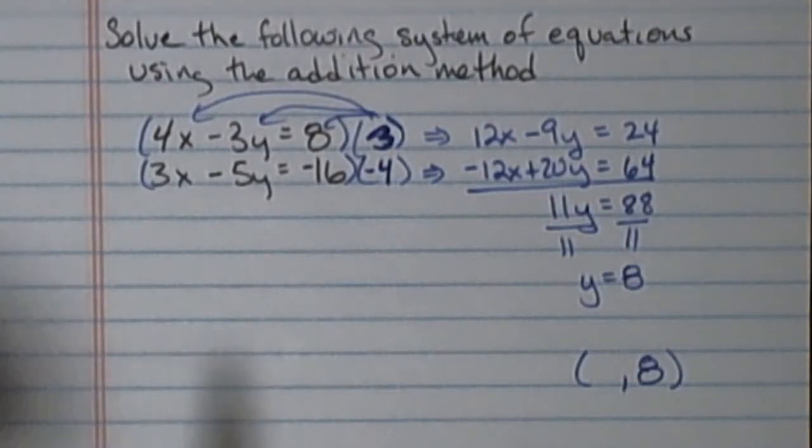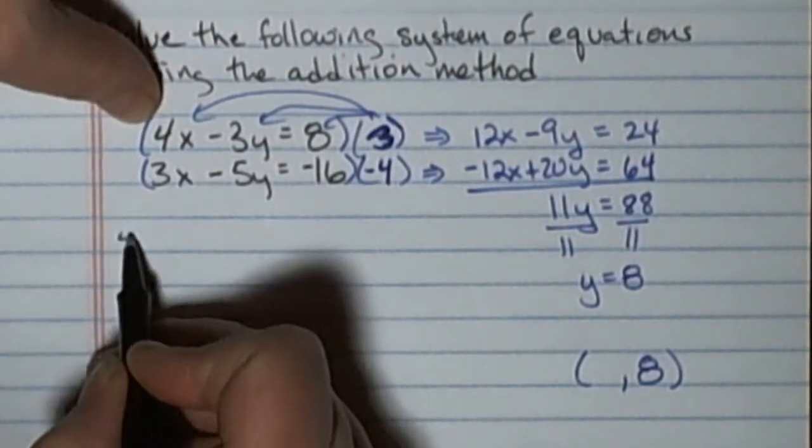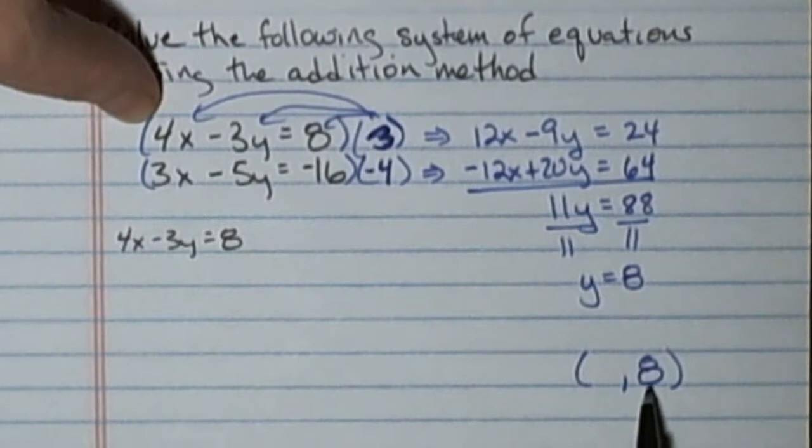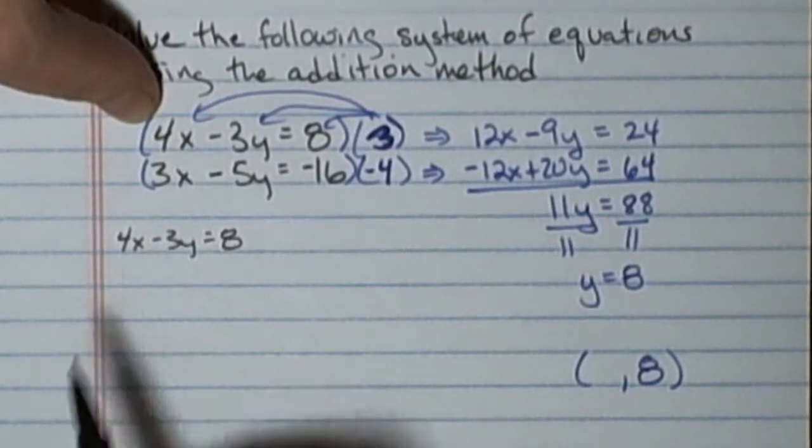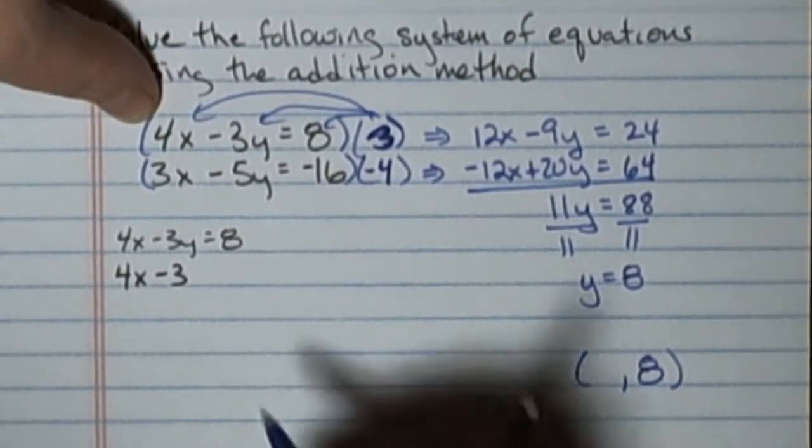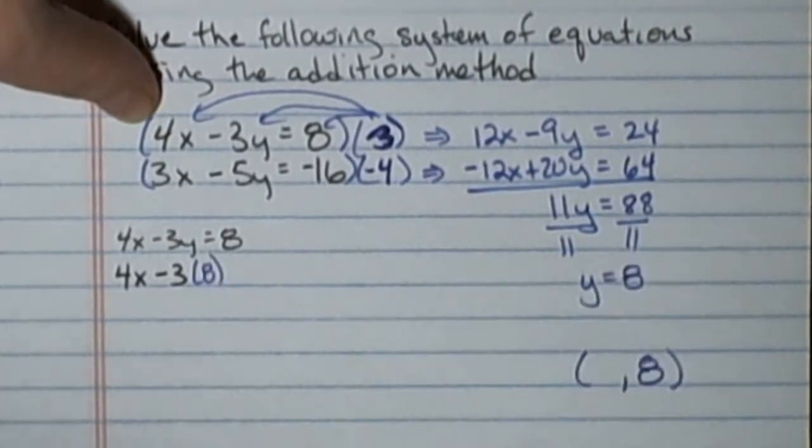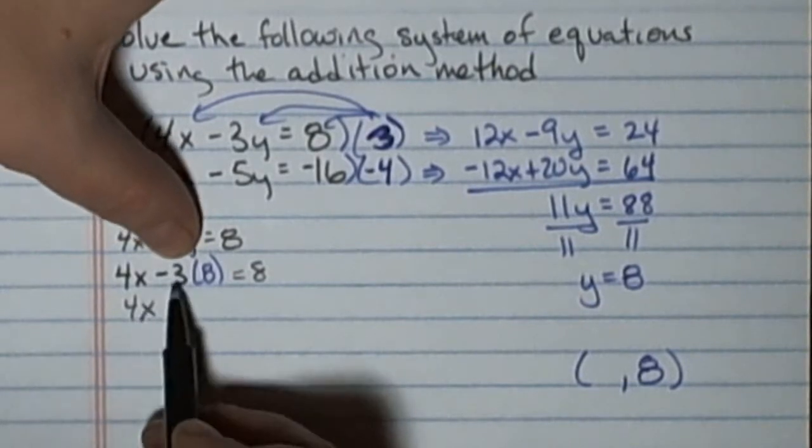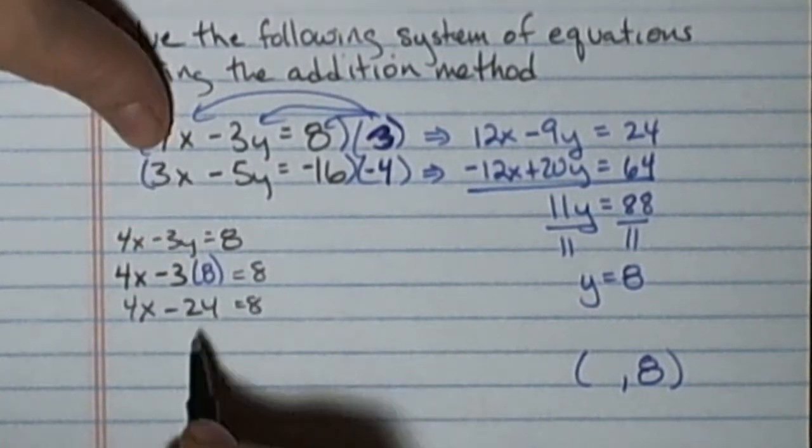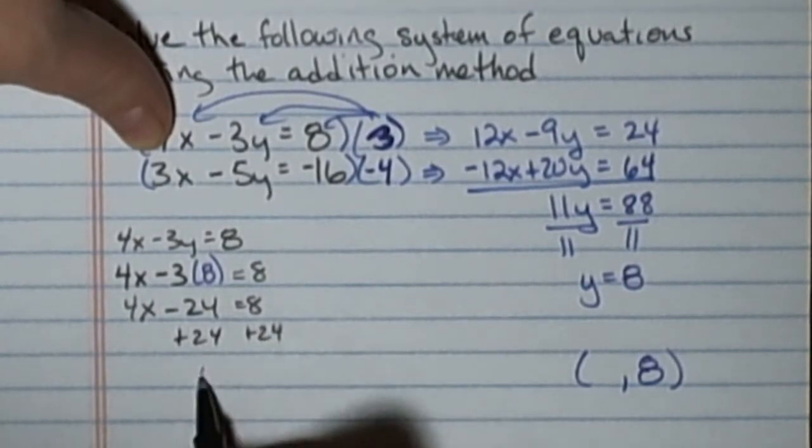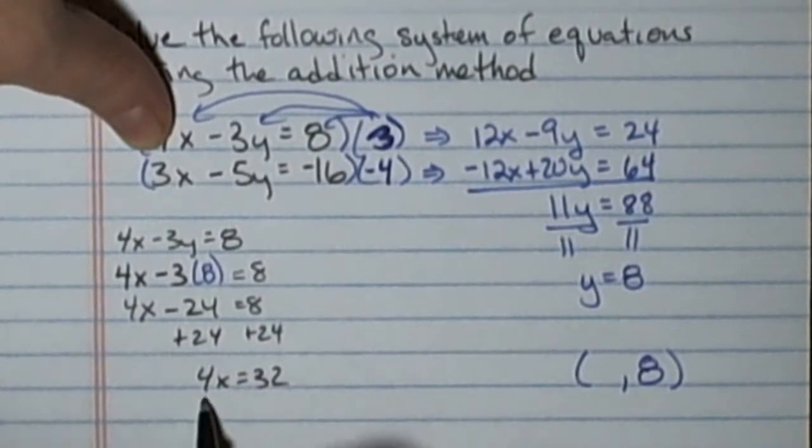To do that I go back and pick one of my original equations, 4x minus 3y equals 8. I'm going to substitute that 8 in for y and solve for the corresponding x. So I have 4x minus 3 times 8 equals 8. 4x minus 24 equals 8. I'll continue solving the equation for x. Last step will be divide by that coefficient and I got x equals 8.